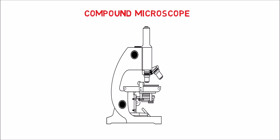A compound microscope has two convex lenses. The lens placed close to the object is called the objective lens. The lens closer to the eye is called the eyepiece or eye lens. Both lenses are attached to a body tube.